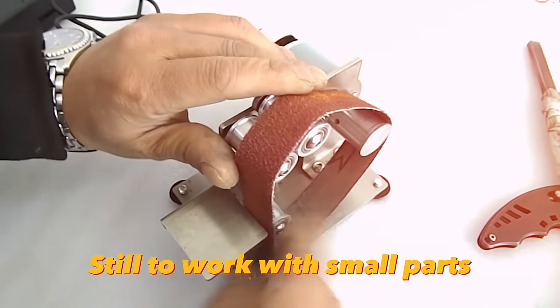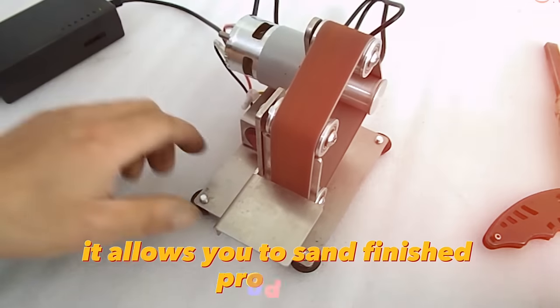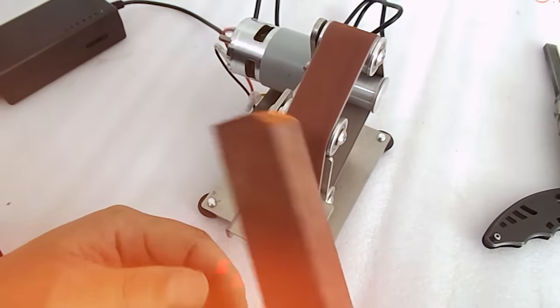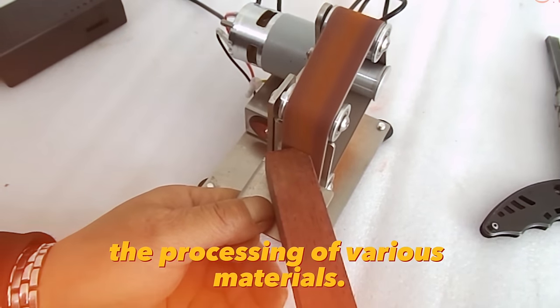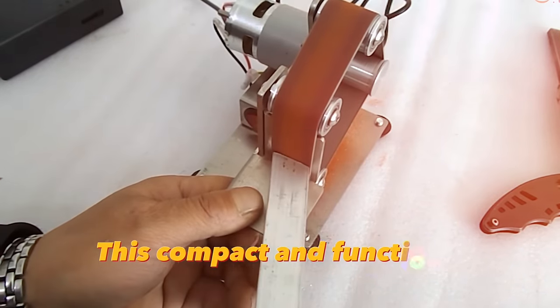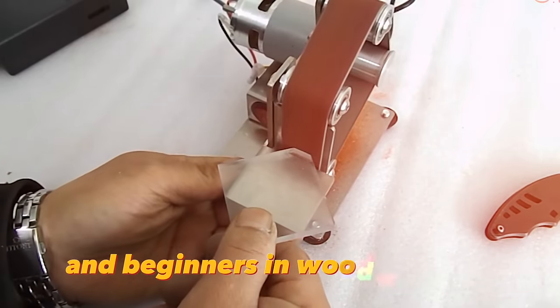To work with small parts you will need a mini grinder machine costing only $40. It allows you to sand finished products, sharpen tools, and perform other tasks related to the processing of various materials. This compact and functional machine will be useful to both professionals and beginners in woodworking.